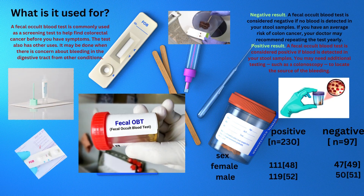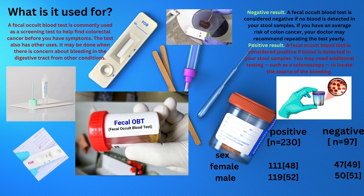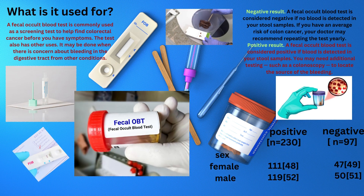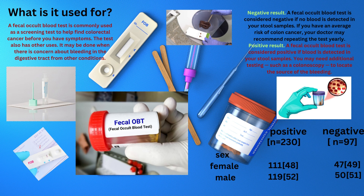Fecal Occult Blood Test. What is it used for? A fecal occult blood test is commonly used as a screening test to help find colorectal cancer before you have symptoms. The test also has other uses — it may be done when there is concern about bleeding in the digestive tract from other conditions.